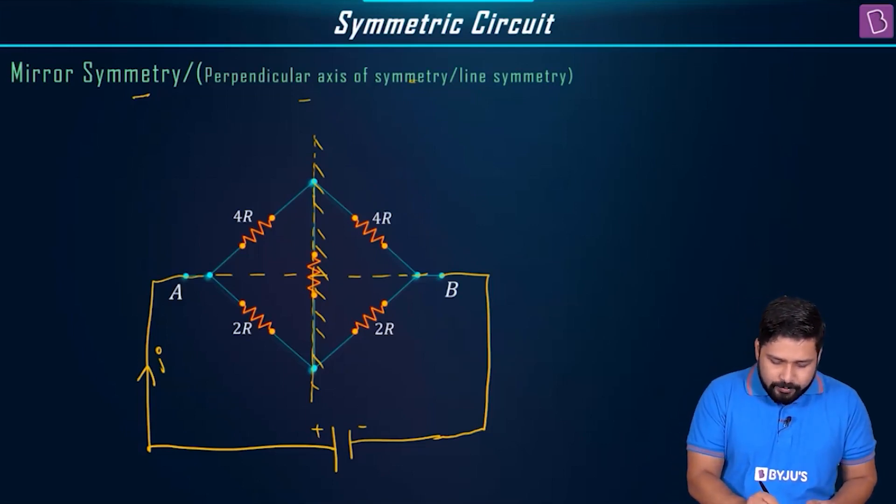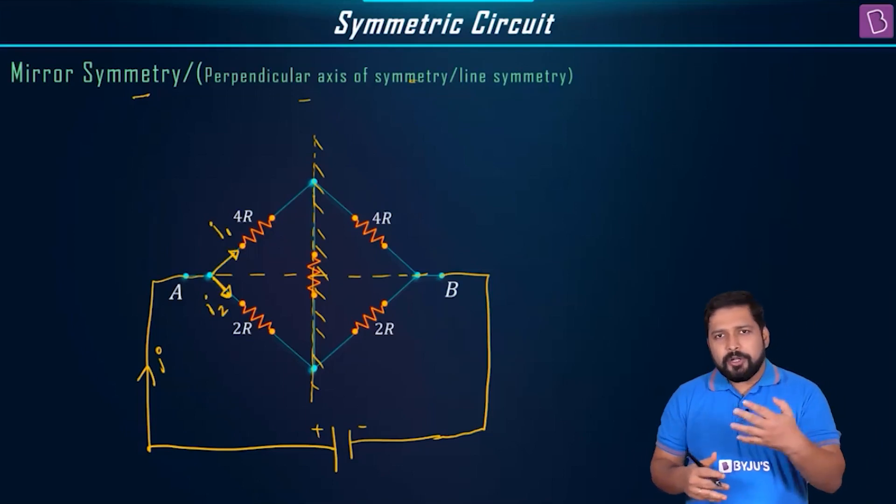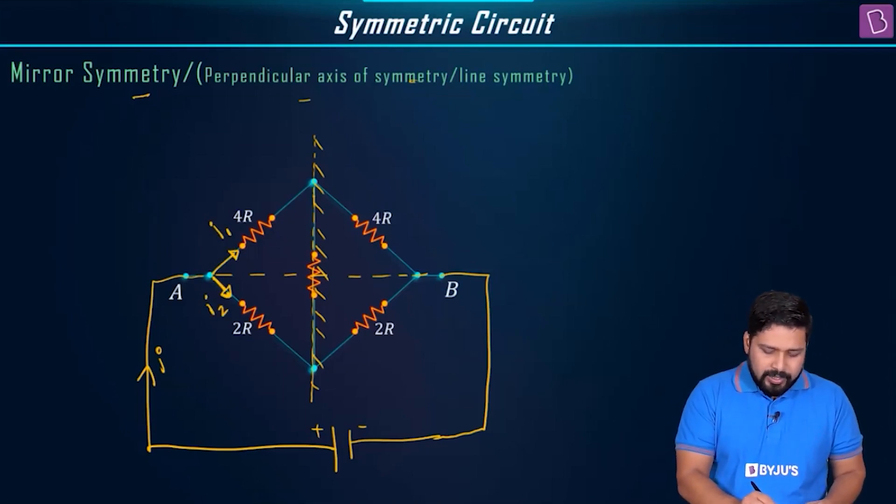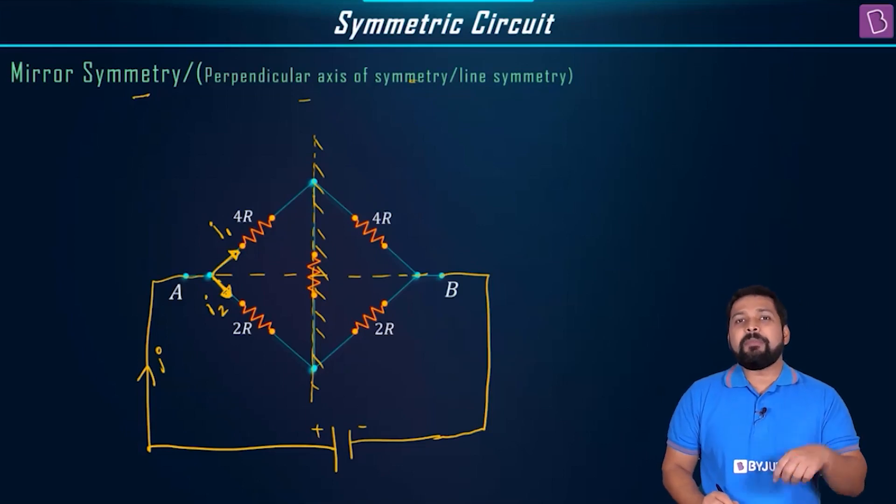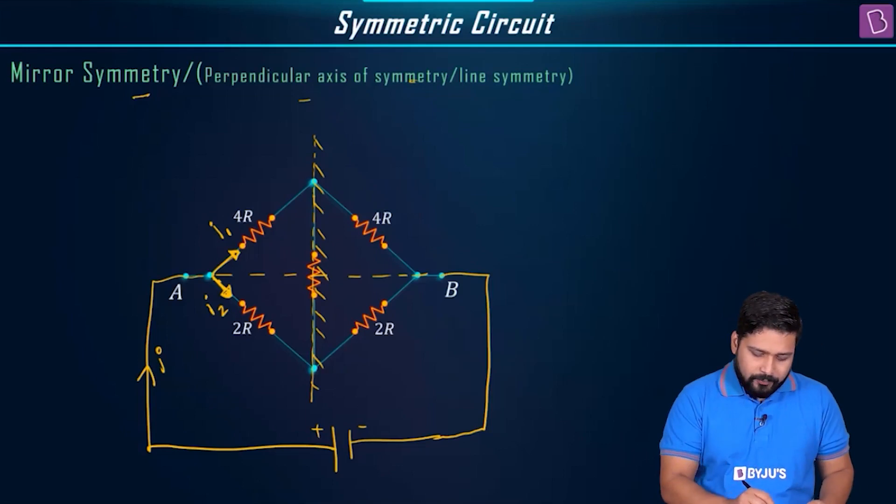We will say that I current comes over here and gets divided into I1 and I2. This is the incoming current into the circuit. I is coming over here and then from this junction, you can see I1 is going like this and I2 is going like this. Now in the mirror image, the same amount of current is going to flow. Remember that.